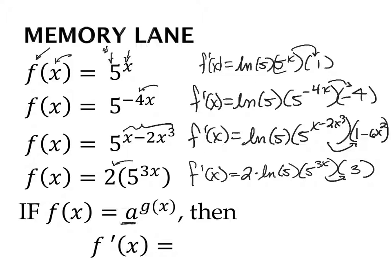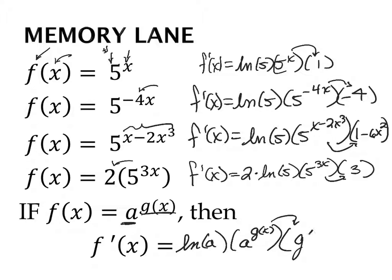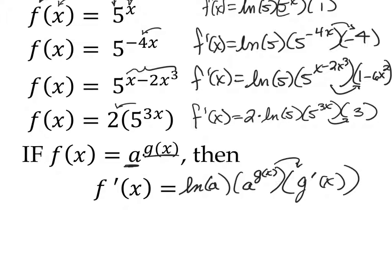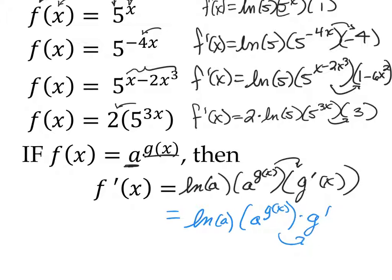So when the base is a and the exponent is some function g(x), we get the natural log of the base times keep the function exactly the way it is — g(x) is just that function of x in the exponent — and then we chain rule out the derivative of that exponent. In shorthand: natural log of a, times a to the g(x), times g prime. Don't forget to apply the chain rule to the derivative of the exponent.